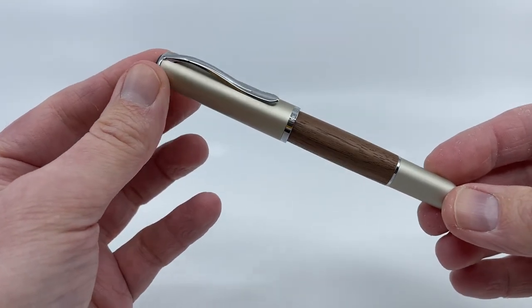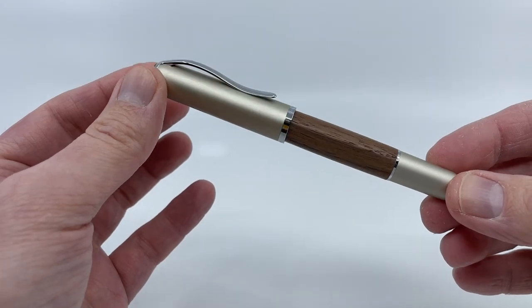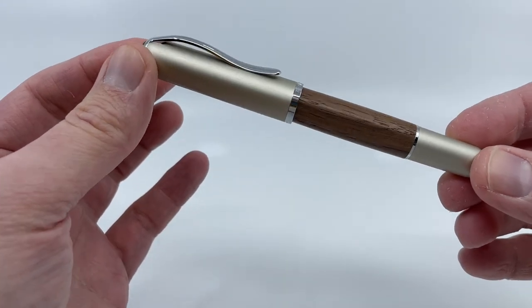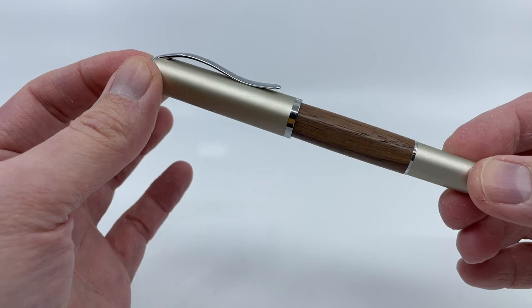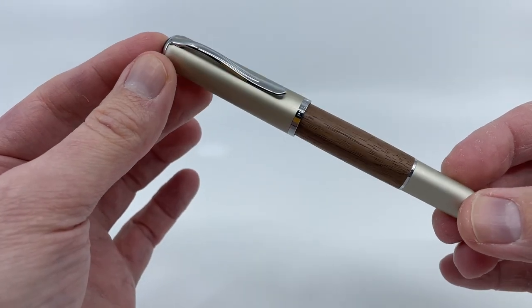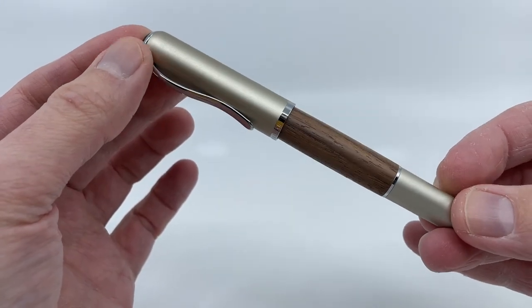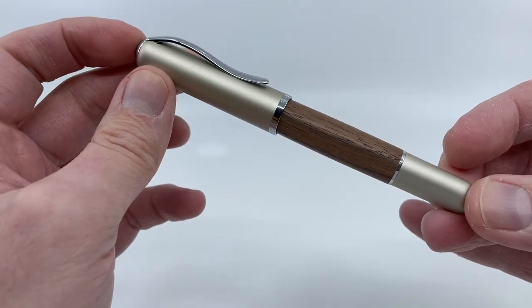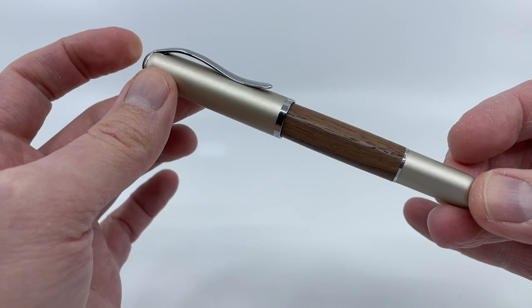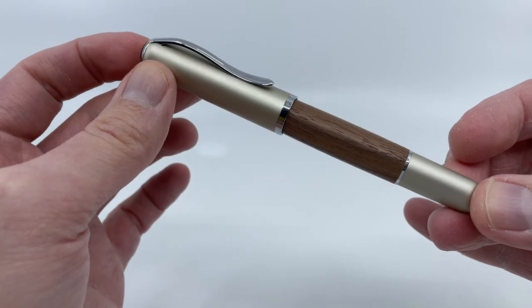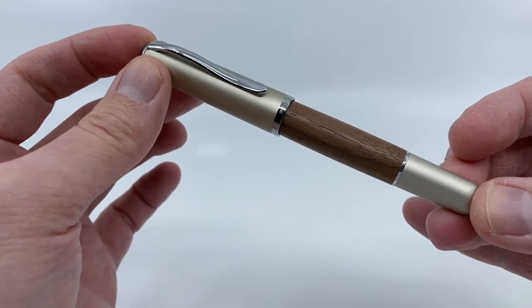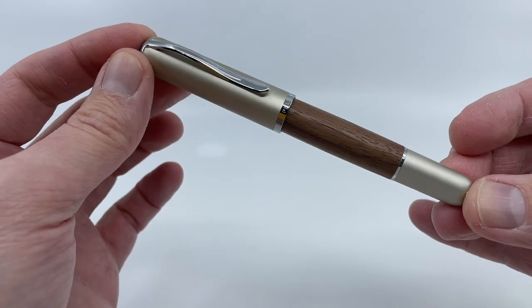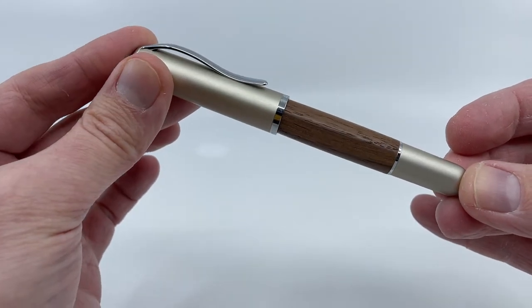So all things considered, the Epic line is, I think often overlooked. Obviously they're now discontinued, but they can be found out there on the secondary market. I think it's an overlooked model. They can be great writers. If you don't mind a cartridge basically only system, they can really be great everyday workhorses. So that's just been a brief look at Pelican's Epic line of fountain pens.